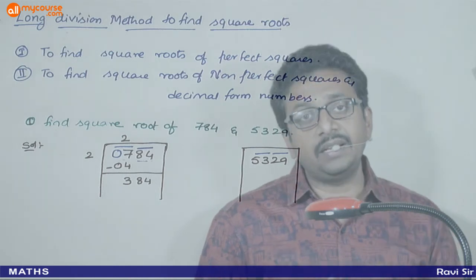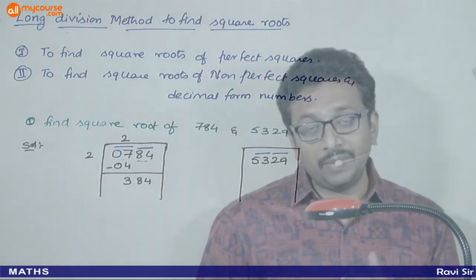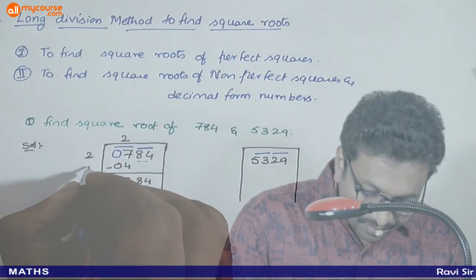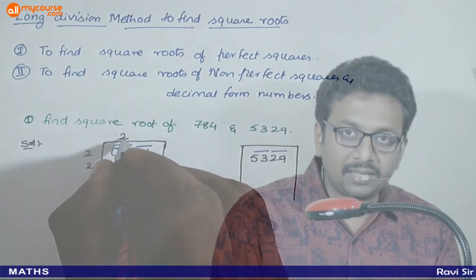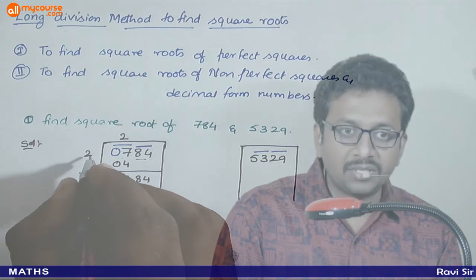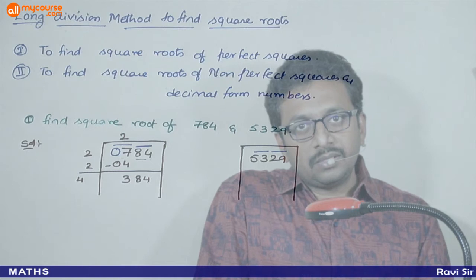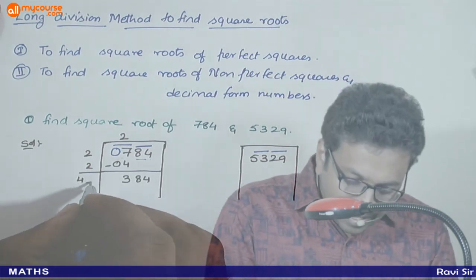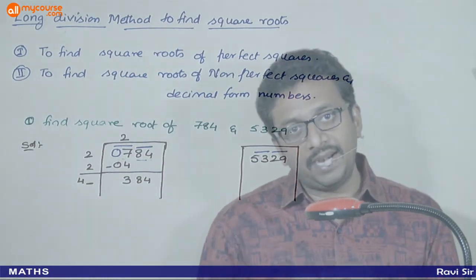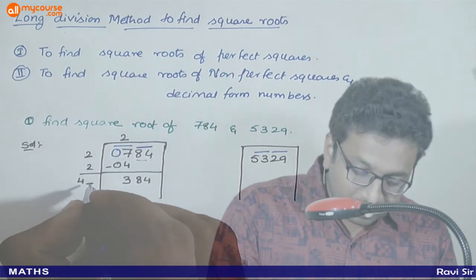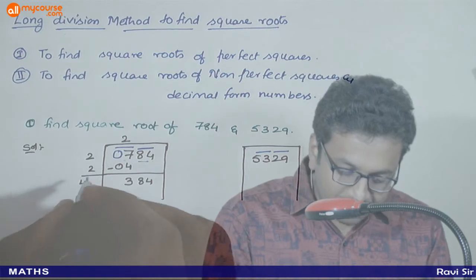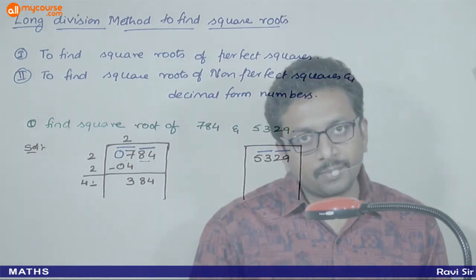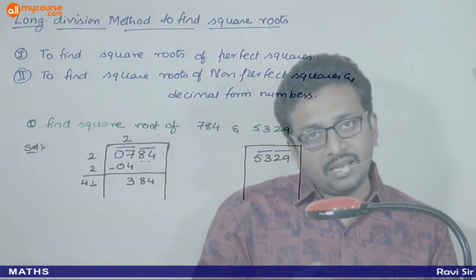In normal division, we carry over one digit at a time, but in this square root method we carry over two digits at a time. Next, write the 2 used above also below on the left side. Then add the two numbers: 2 + 2 = 4. So 4 is the base. Now annex one digit to 4 and multiply: check 41×1, 42×2, 43×3, and so on, looking for a product just less than or equal to 384.